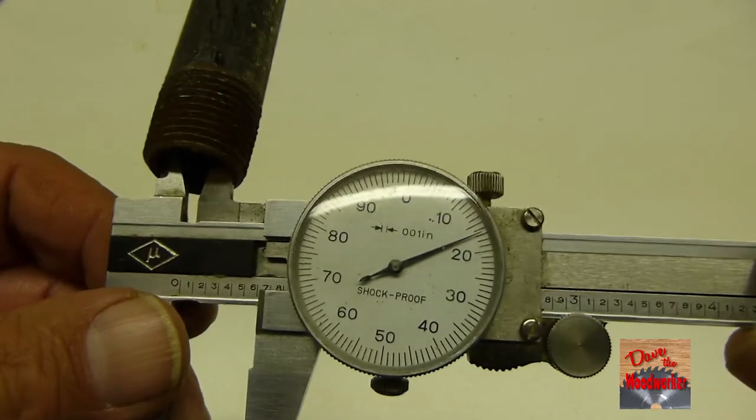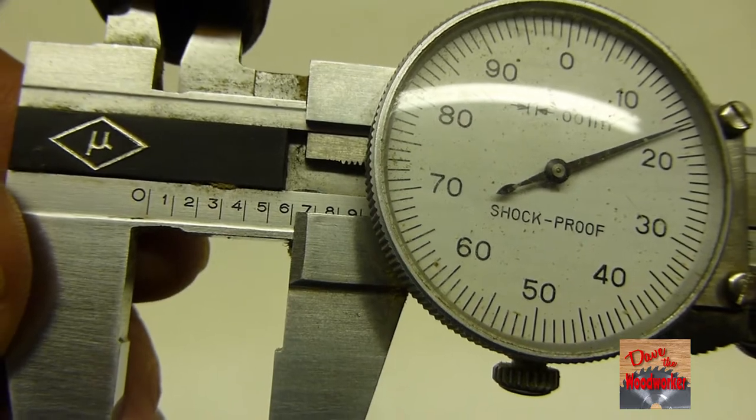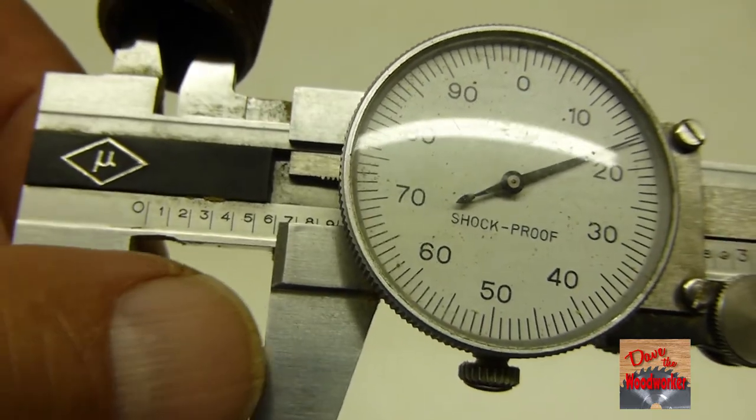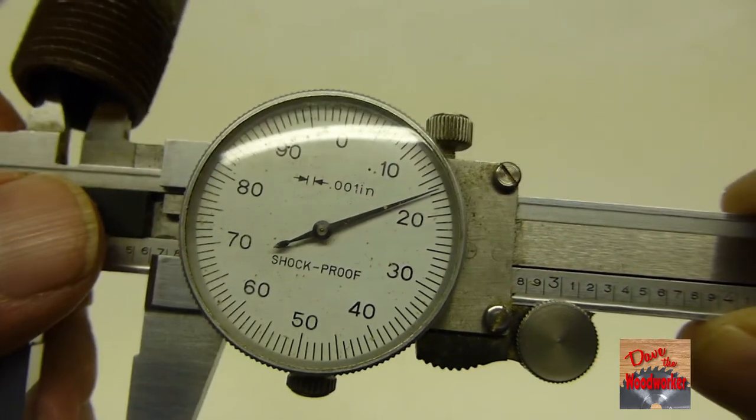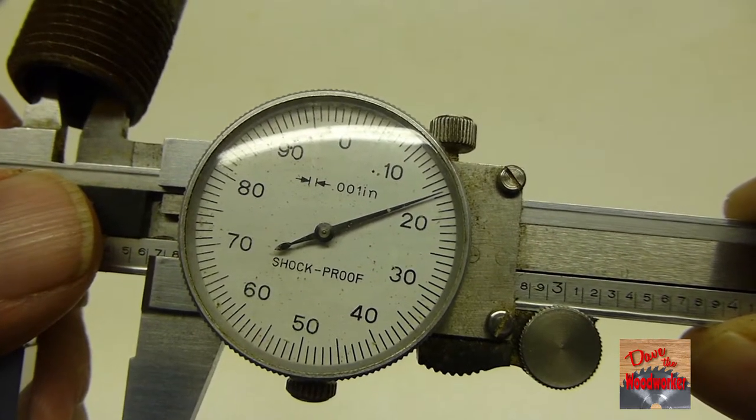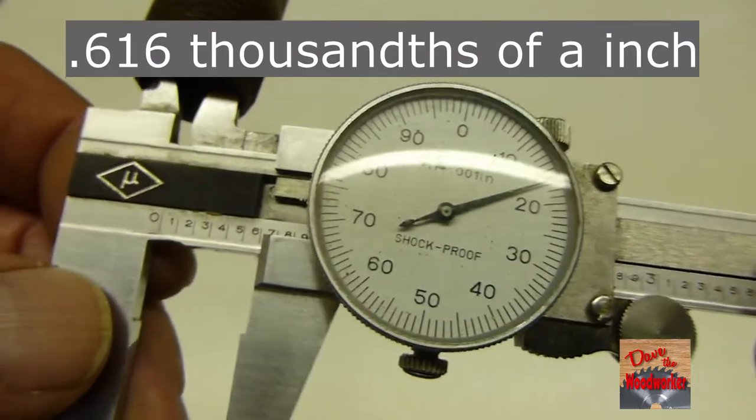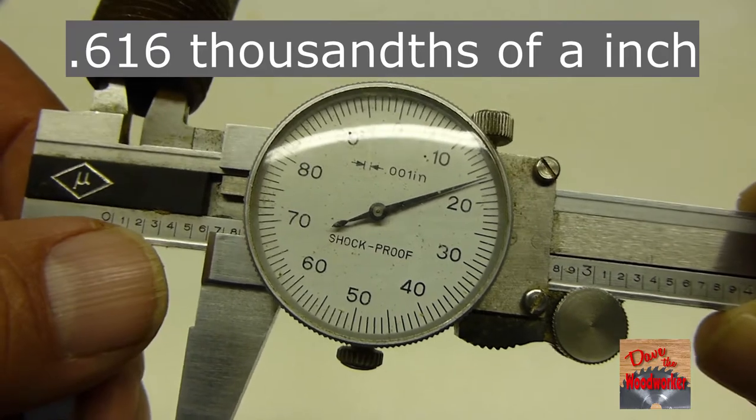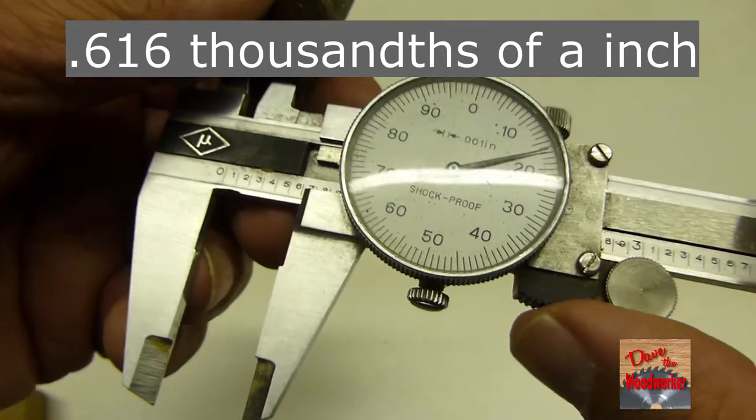Okay, as you can see here, if we look at it, count over the numbers. It's six hundred, and looks like it's six hundred and sixteen thousandths, almost seventeen. So it's six hundred and sixteen thousandths. That's the inside diameter. That's how you read it.